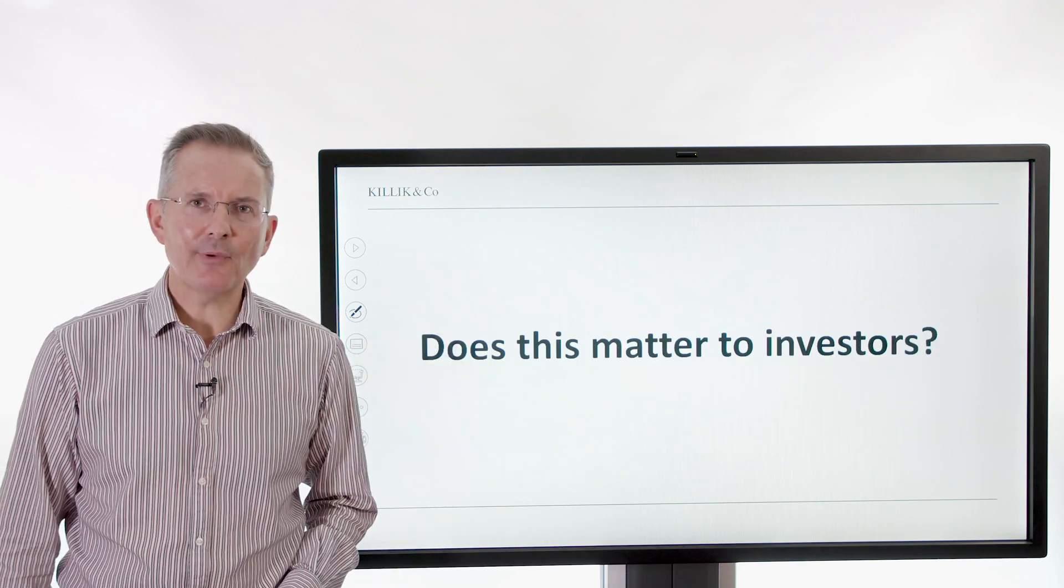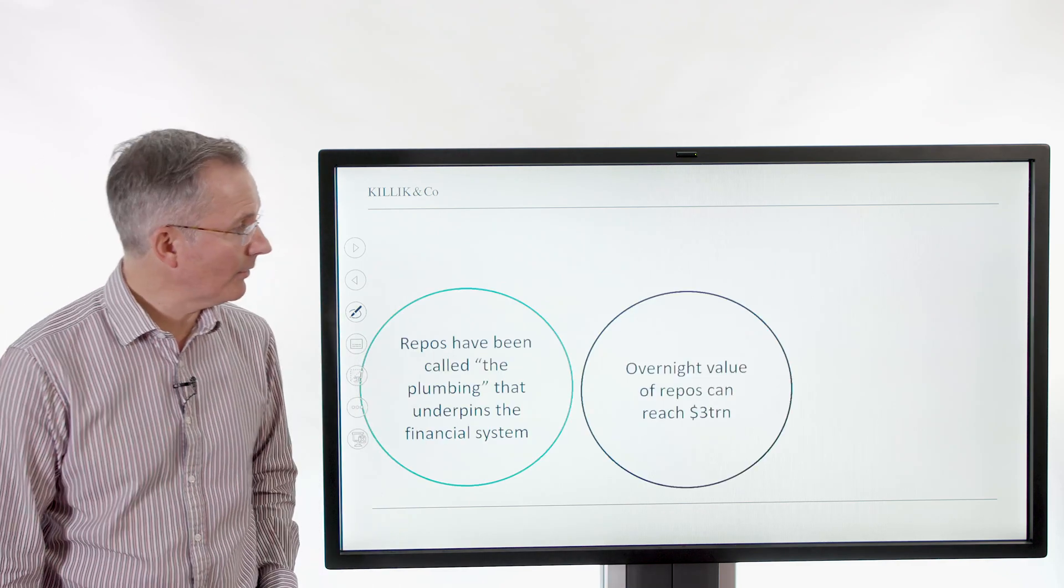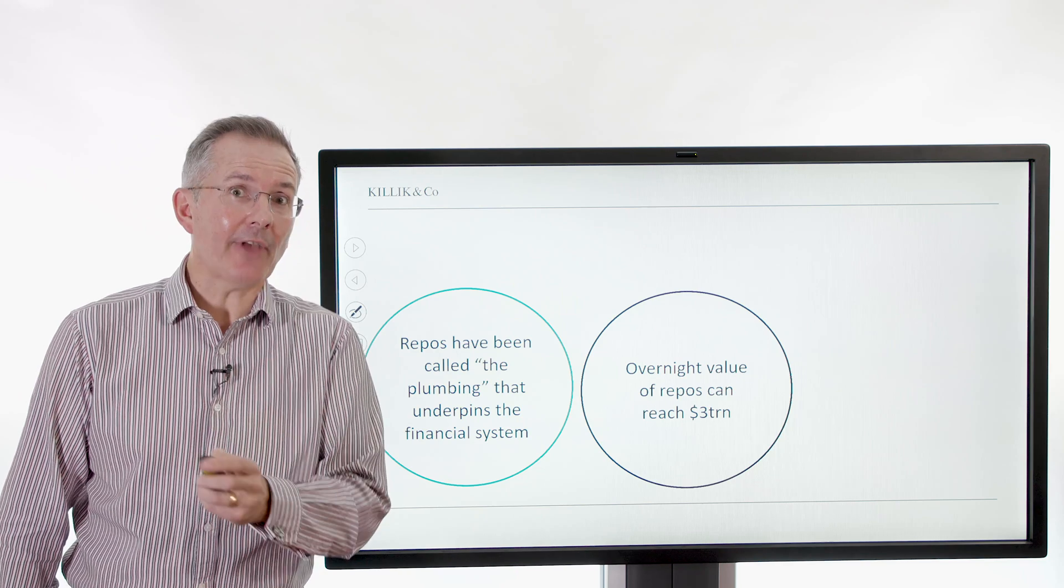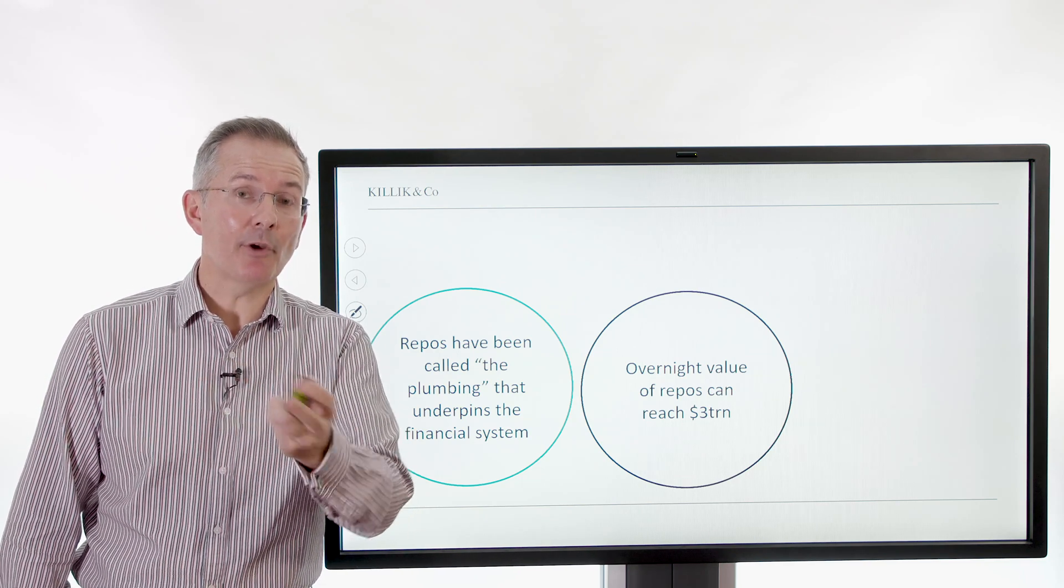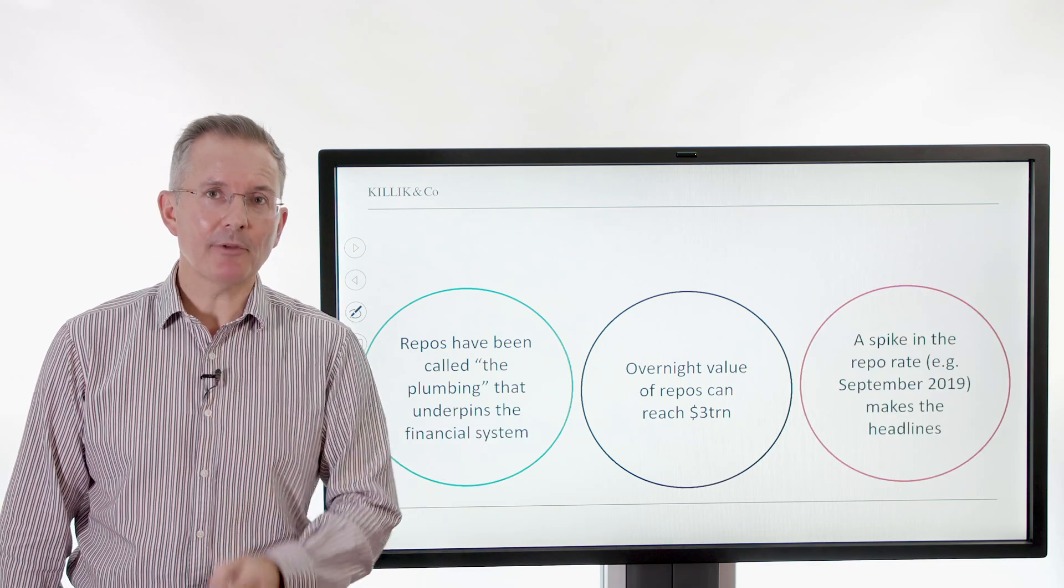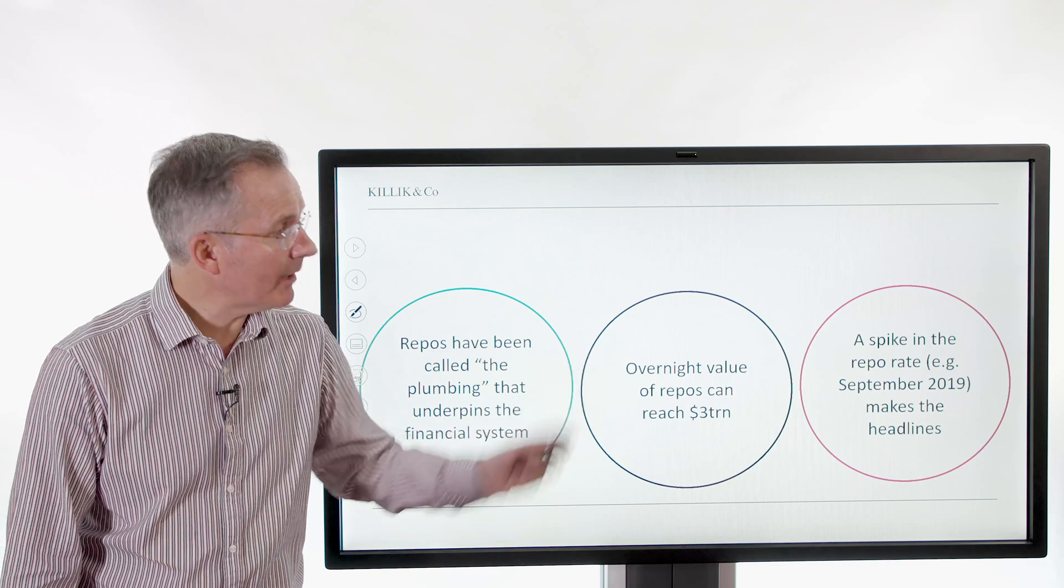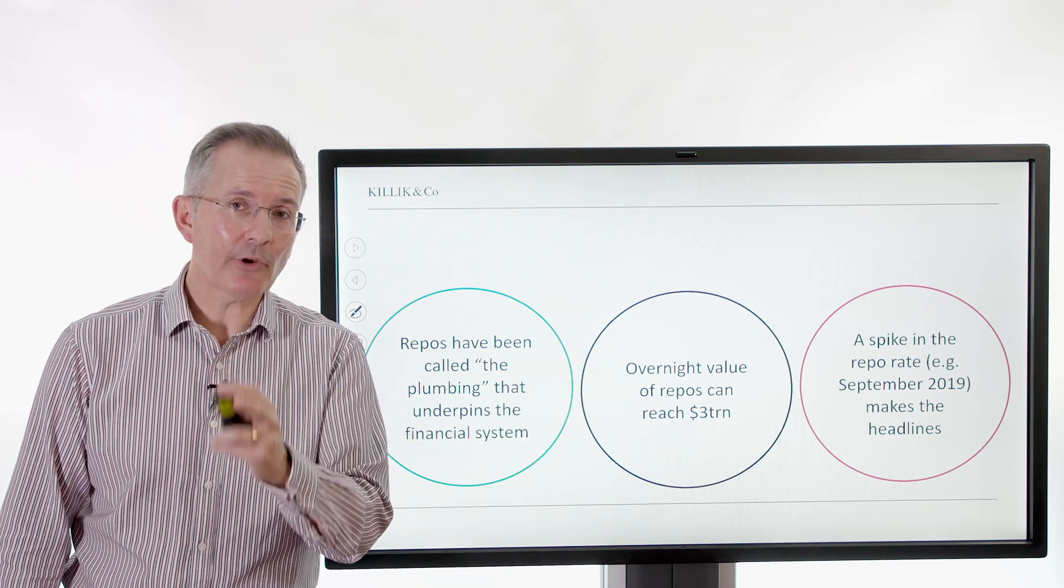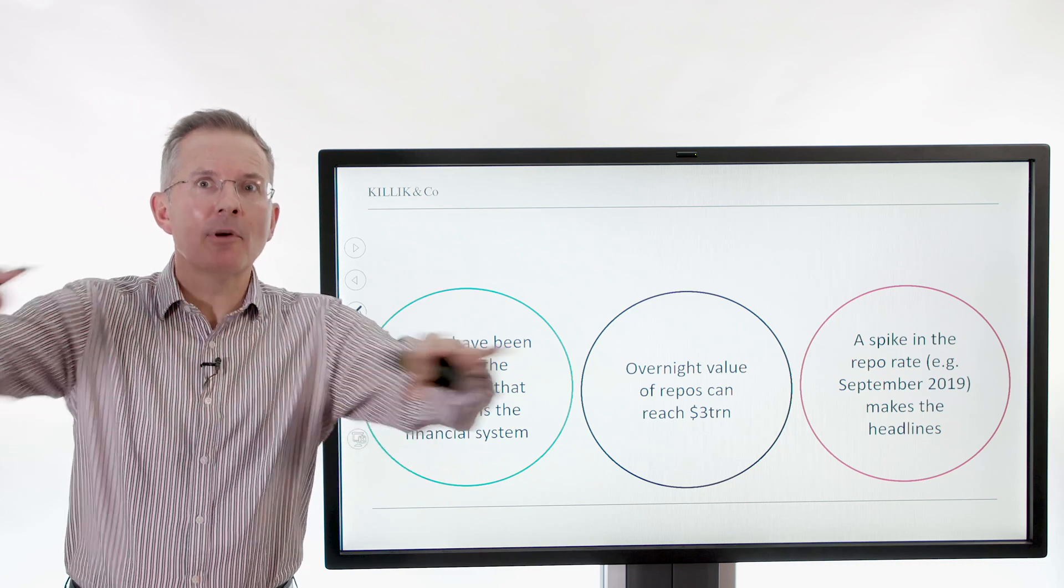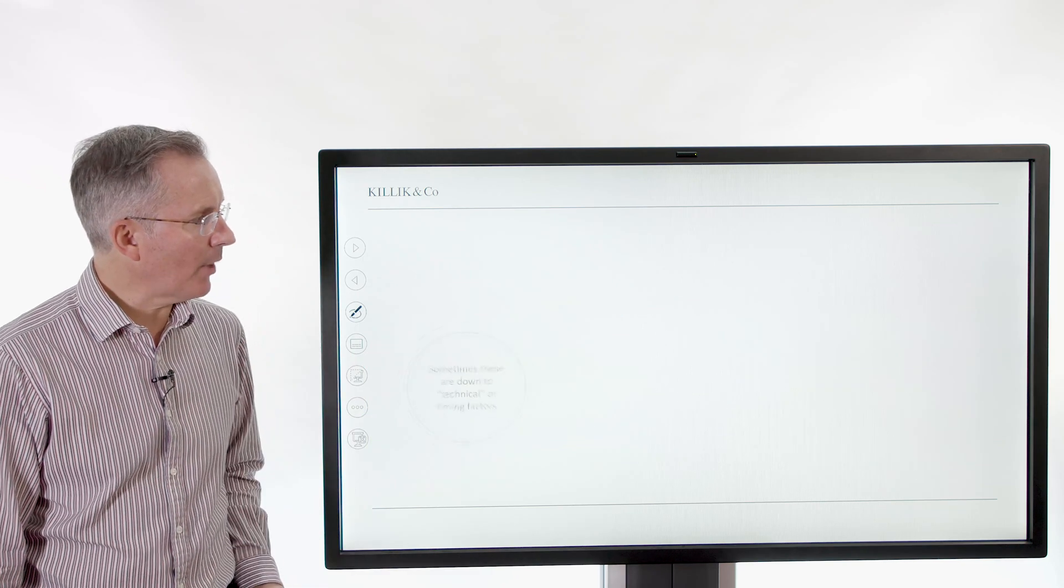Now, does this all matter to investors? So here's the question. Well, repo has been called the plumbing that underpins the financial system. I mentioned that earlier on. The overnight value can reach $3 trillion, albeit it's very short term in the sense that normally repos are reversed very quickly, can be overnight, and a spike in the repo rate can make the headlines. So normally people are sitting there thinking, well, frankly, is this a very important part of financial markets as a long-term investor? Only arguably it makes the headlines. And the reason is you have to ask the question, what is going on? What would cause a spike in that rate across the market at which essentially banks are prepared to do very short term deals with each other?